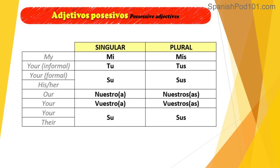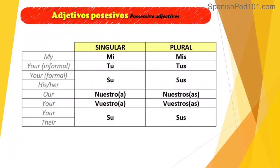To say 'your' informal — remember we have two different forms in Spanish. 'You' informal uses the informal register with 'tú,' and then there is a formal register with 'usted' for formal situations. The possessive adjective for 'tú' is singular 'tu' and plural 'tus'. We're going to talk about this difference in a minute.